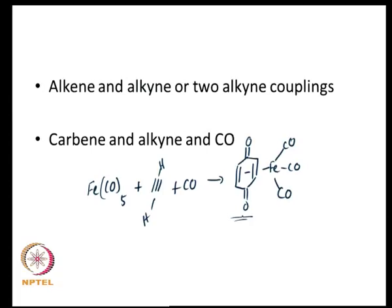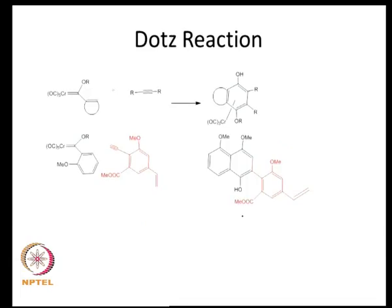We will end with the last example — the Dötz reaction. The Dötz reaction involves the combination of a vinyl carbene and an acetylene. Vinyl carbene and acetylene can be combined together along with carbon monoxide to give a fairly complicated ring structure. This is a good example showing that very complex chemistry can be carried out in the coordination sphere of the metal atom.